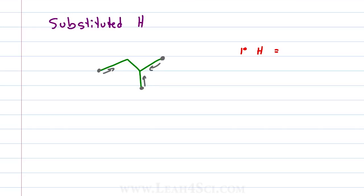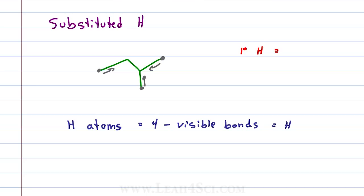Then figure out how many hydrogens sit on this carbon. The trick is: four — the total number of bonds you can have on carbon — minus all of the visible bonds to other atoms like carbon, oxygen, nitrogen — the rest will be hydrogen atoms. For this carbon, we see one bond: four minus one equals three. The carbon below, same thing, four minus one is three. And the carbon on the left, four minus one is three. We have three primary carbons each containing three hydrogens, for a total of nine primary hydrogen atoms.